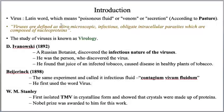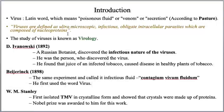Now I am joining all the words and reading the definition once again. Virus can be defined as ultra microscopic, infectious, obligate intracellular parasites which are composed of nucleoproteins. Ultra microscopic means you need an electron microscope to observe their structure. Infectious means they cause diseases to cattle, mankind, plants, and even bacteria. Obligate intracellular parasites means they enter into the cell to cause disease. Nucleoproteins means they are made up of nucleic acids — DNA and RNA — and also proteins.